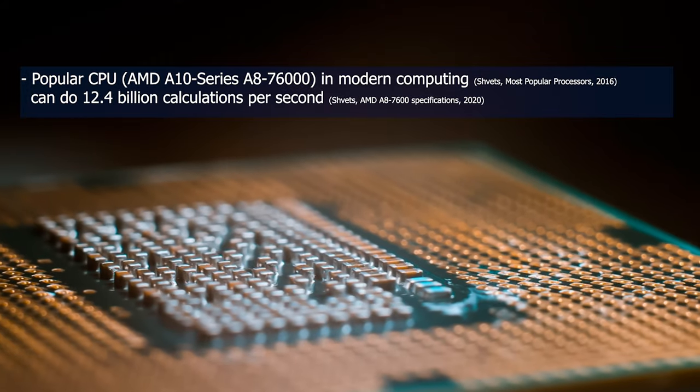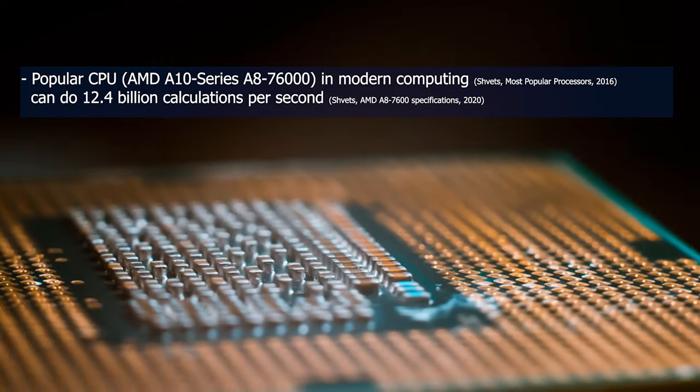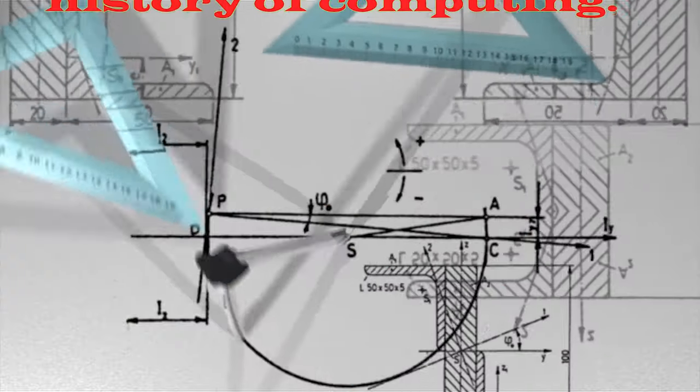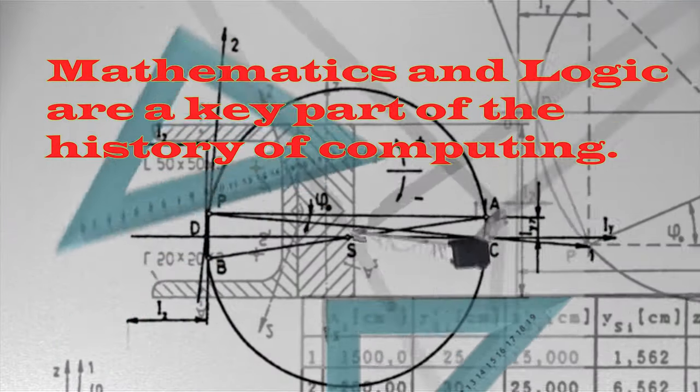The most popular CPU in modern computing can do 12.4 billion calculations per second, and its speeds are only set to increase. This video aims to discuss if mathematics and logic are a key part in the history of computing.